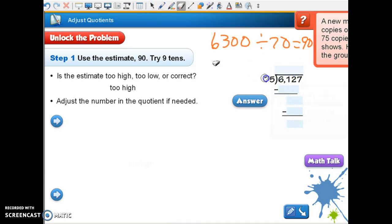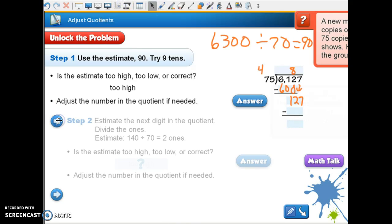So our estimate is too high. So we're going to have to go back and we're going to have to try one number less than 9, which is 8. And 8 times 5 is 40, and what is 7 times 8 plus 4? 60. And when I subtract I get 12.